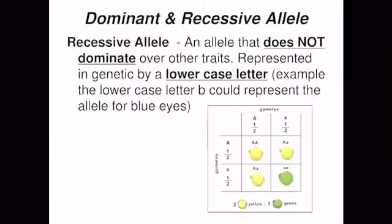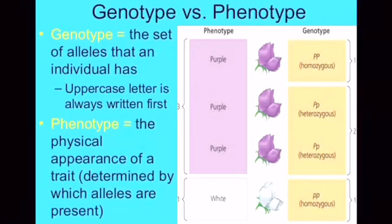So the terms phenotype, genotype, homozygous, heterozygous, dominant, and recessive are all clear to you. Go through these topics and try to understand with examples. Next class, we will study about the laws of Mendel. Thank you.